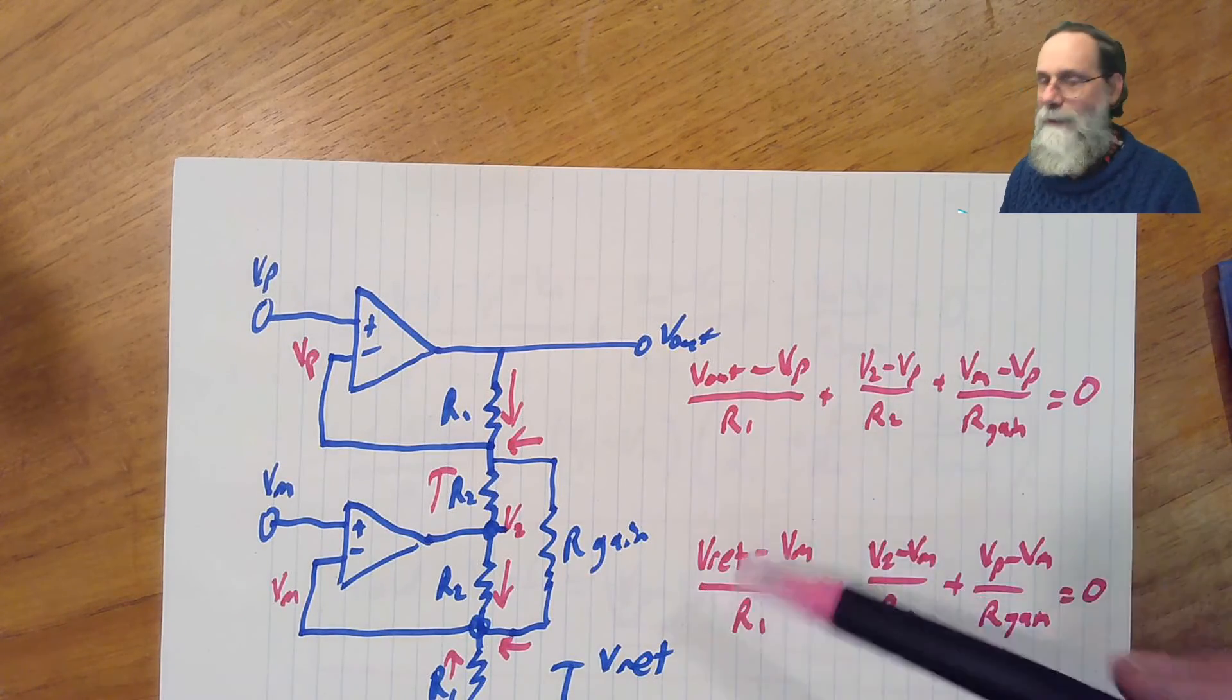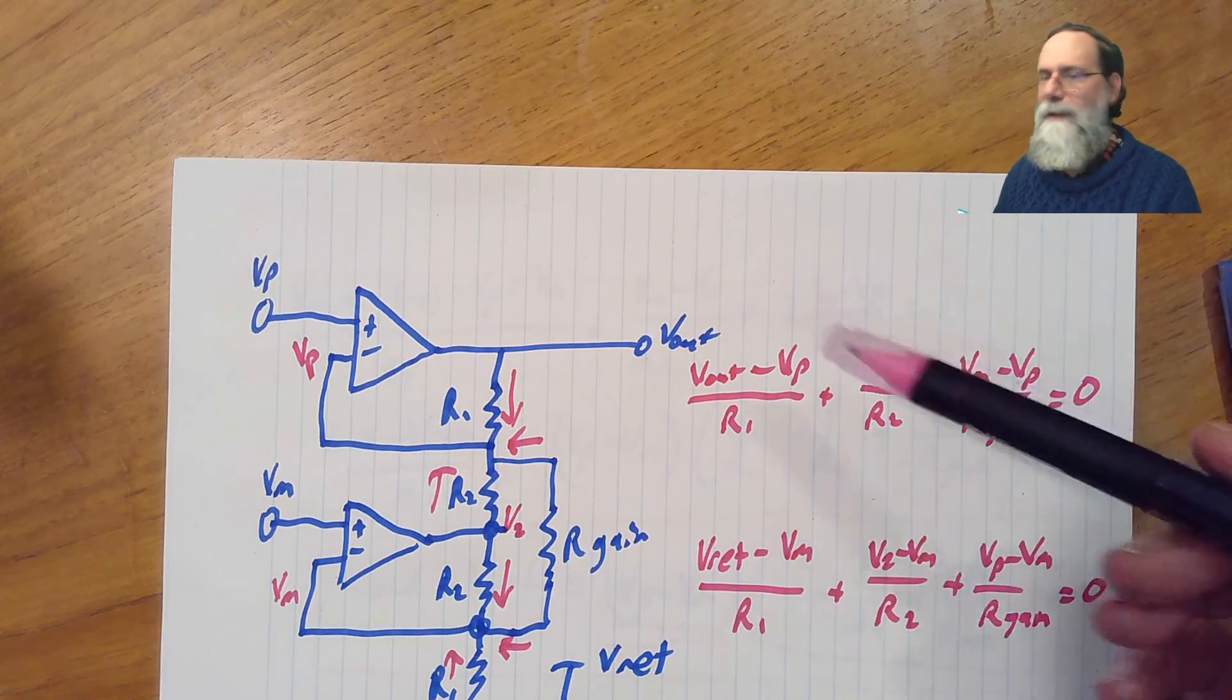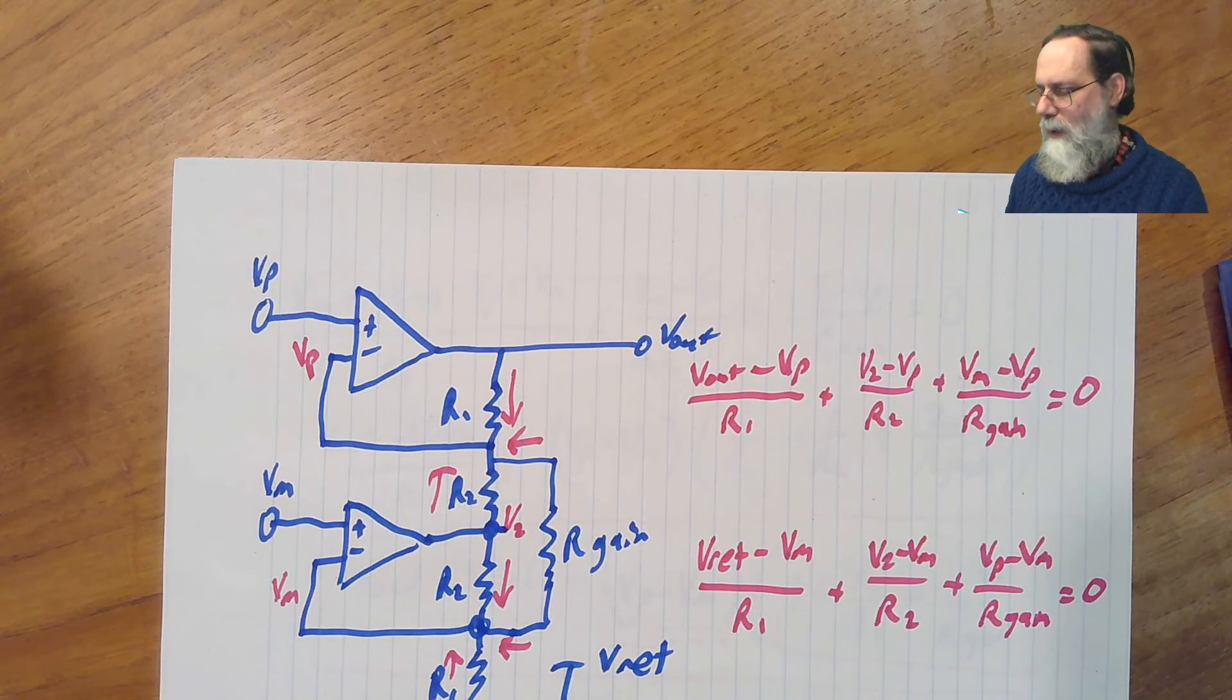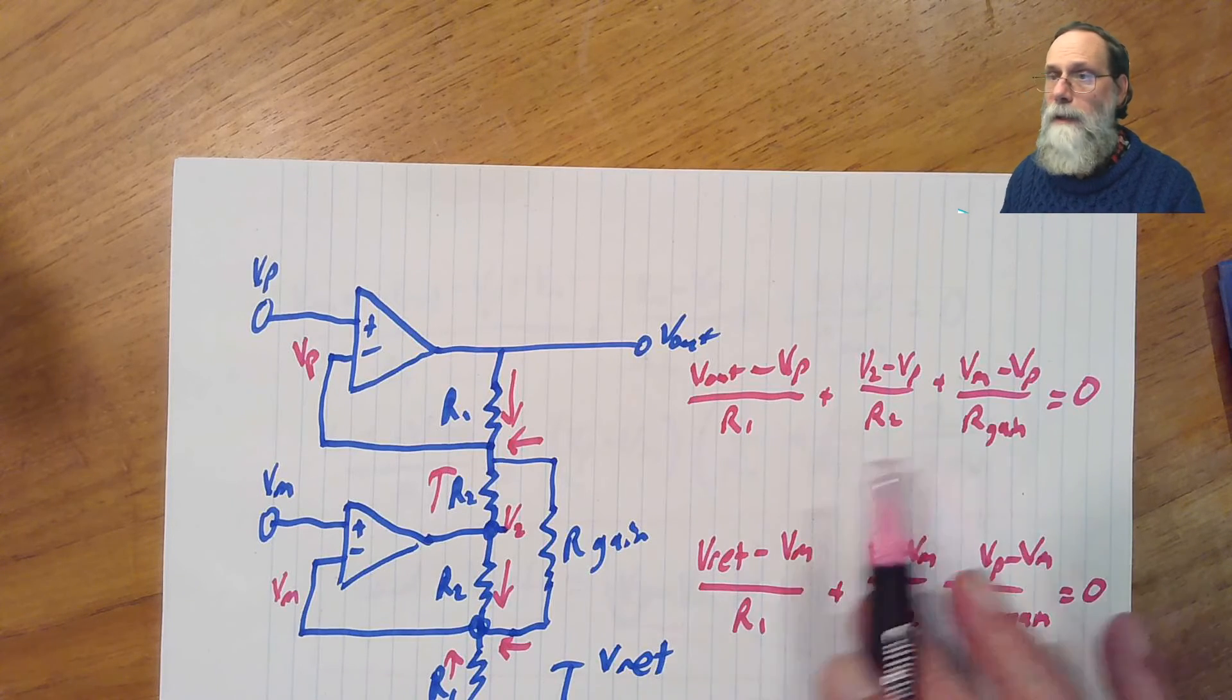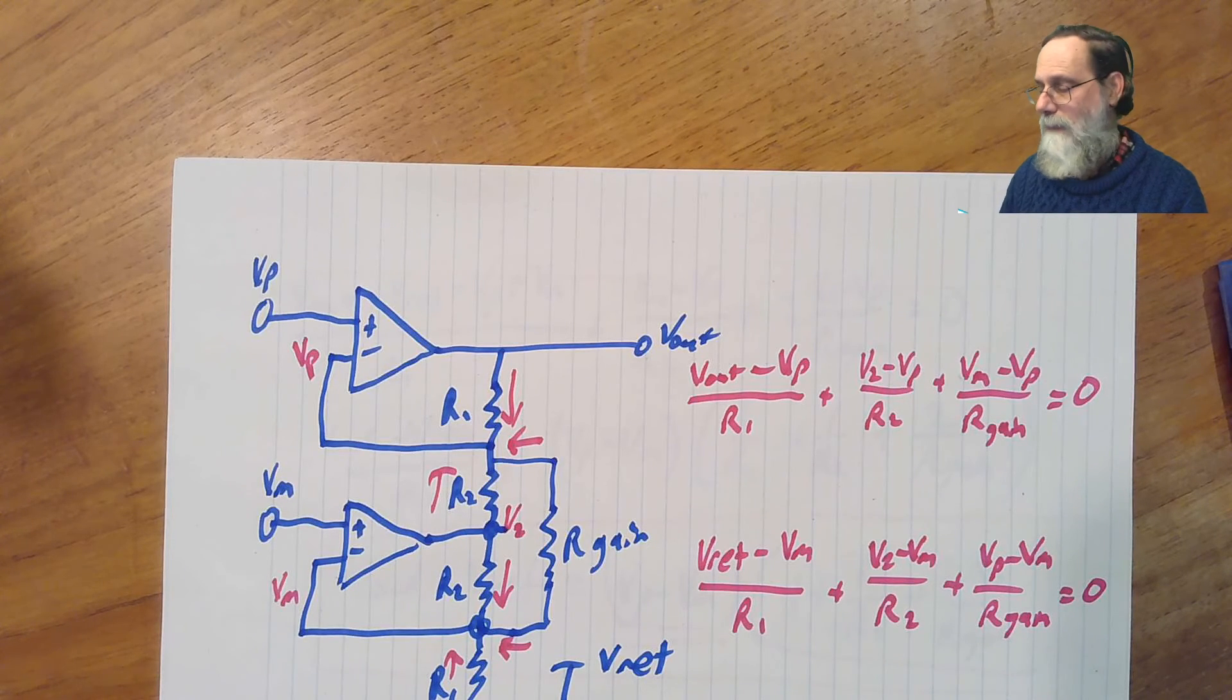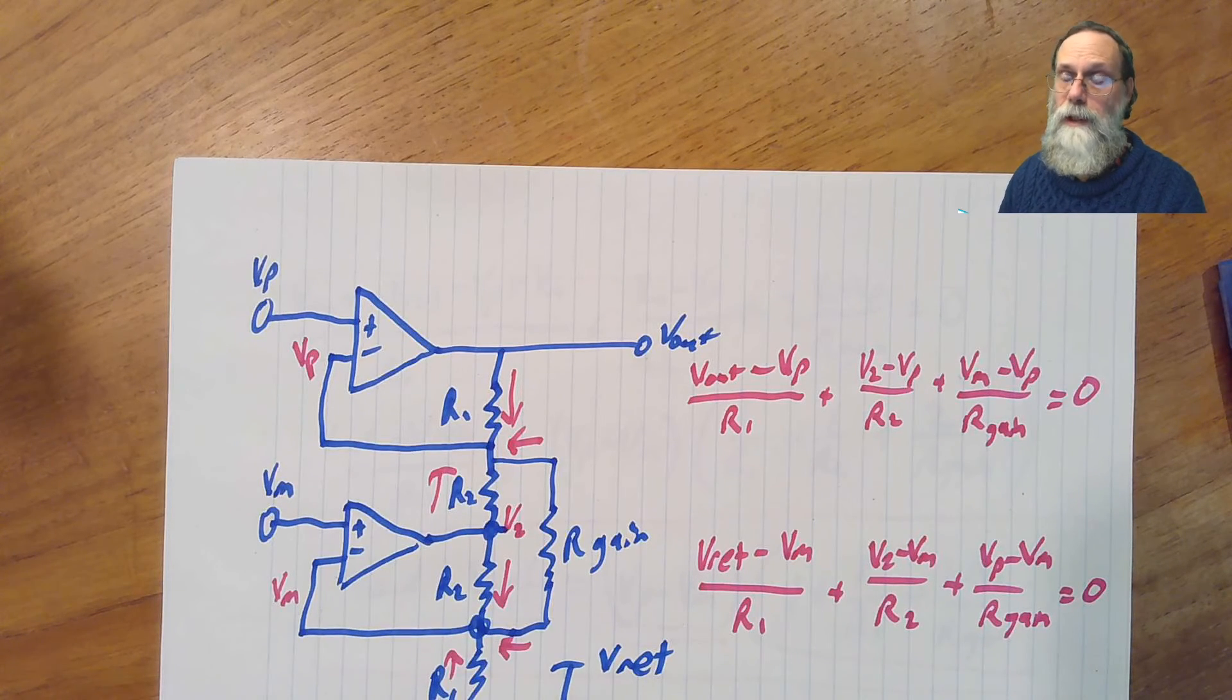you can substitute, or vout minus vref is, you can substitute in for them and clean things up. It's still kind of a mess in terms of the algebra. But the bottom line comes down to the constraints on v2 are reasonable. They're, in fact, a little less strict usually than the constraints you get on the internal nodes of the 3 op amp instrumentation amplifier.